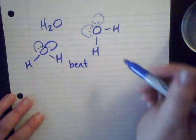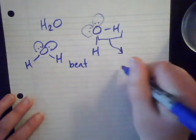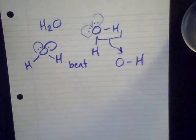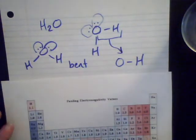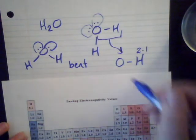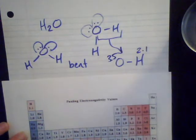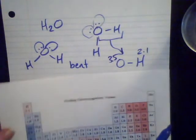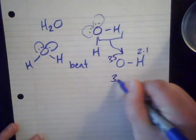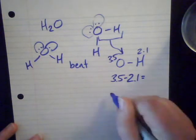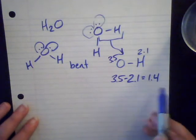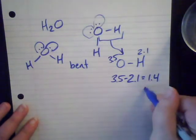If I look at just one of the O–H bonds and compare oxygen and hydrogen on the Pauling electronegativity scale: hydrogen is 2.1, and oxygen is 3.5. When I take the difference — 3.5 minus 2.1 — I get a difference of 1.4. This is again in between 0.4 and 1.7, which means this is a polar bond.